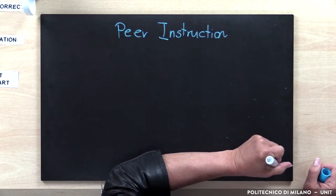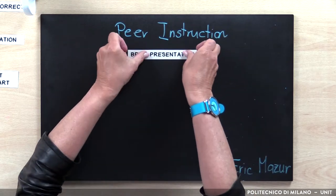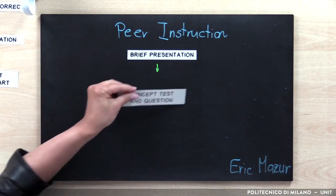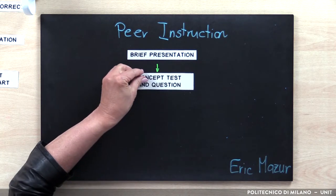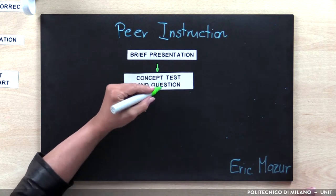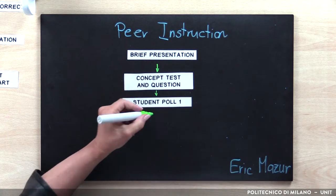The questioning procedure proposed by Eric Mazur from Harvard University is as follows. After a brief presentation, the instructor poses questions based on students' responses to their pre-class reading. Students reflect on the question and then commit to an individual answer by voting.